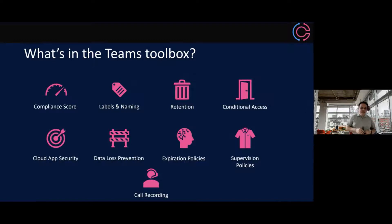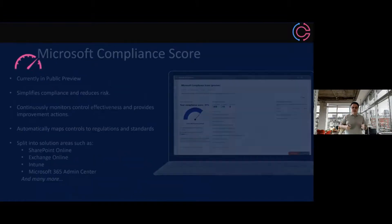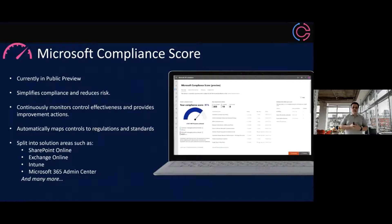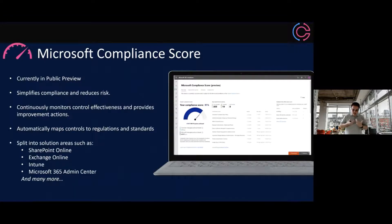So what's in the Teams toolbox? There are a multitude of different things. I'm going to take nine to start with. On the compliance journey, we want to see how we're doing already — this is where Compliance Score comes into play. Compliance Score is available in the Microsoft 365 Compliance Center, currently in public preview. It's essentially about simplifying that compliance journey and reducing risk. It continuously monitors the controls you're working towards — similar to Productivity Score and Secure Score — tools available to tenant administrators and other roles in the organization.